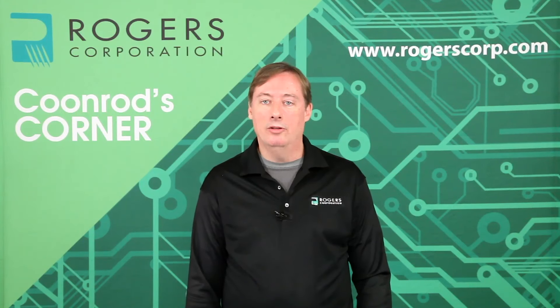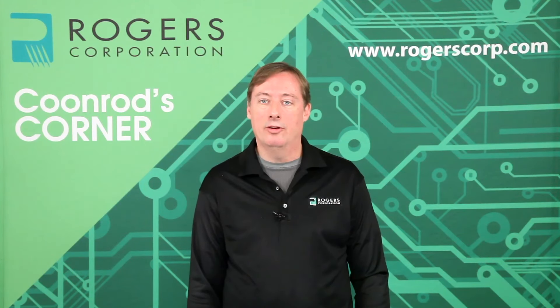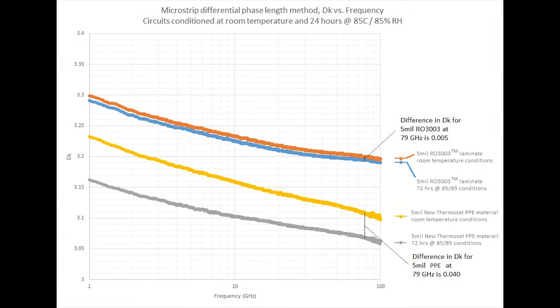Moisture absorption affects more than just insertion loss — it also affects phase response and effective dielectric constant. The chart shown here shows dielectric constant versus frequency using microstrip differential phase length testing on the same materials. For the 5 mil RO3003 circuit, comparing room temperature conditioning to the 85-85 conditioning, there's very little difference — a dielectric constant change of only 0.005 at 79 GHz, which is pretty insignificant. For the competitive PPE materials at 79 GHz, there is a much more dramatic change of 0.04 in dielectric constant — about eight times the magnitude difference.